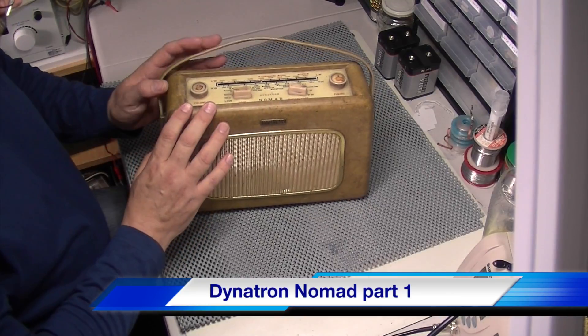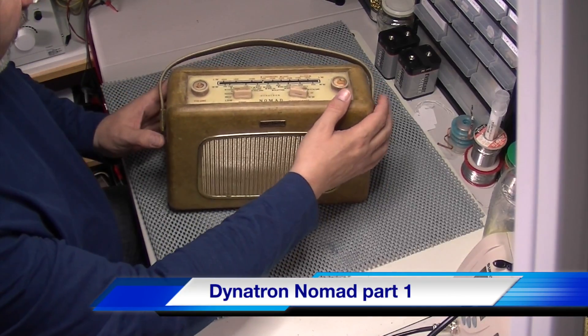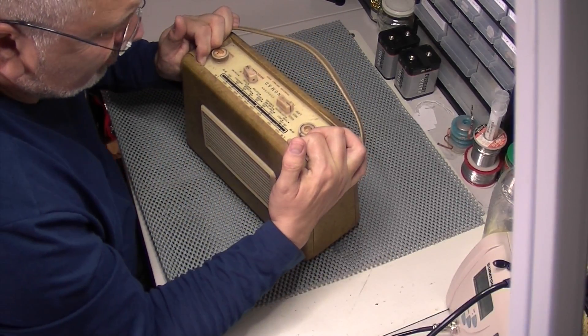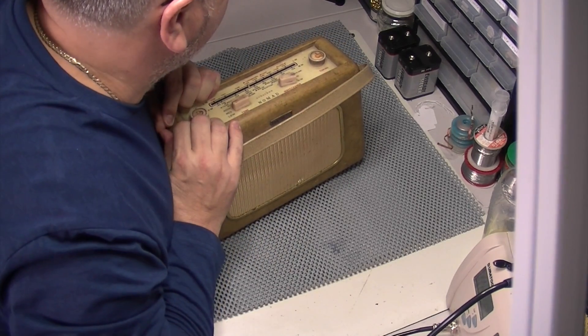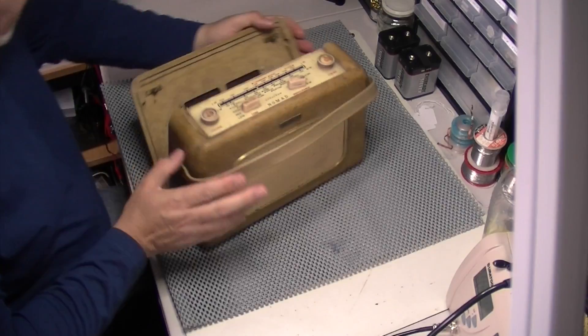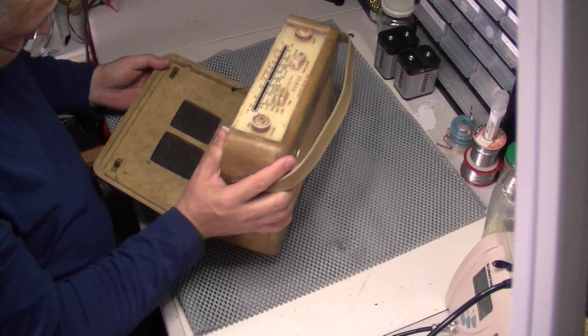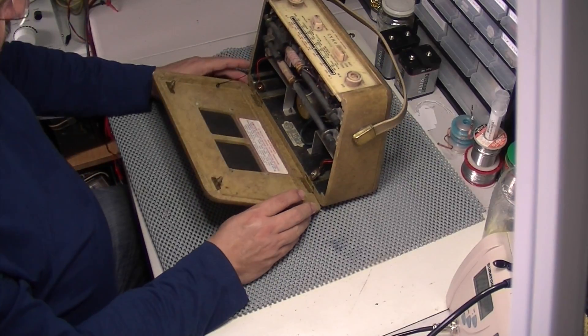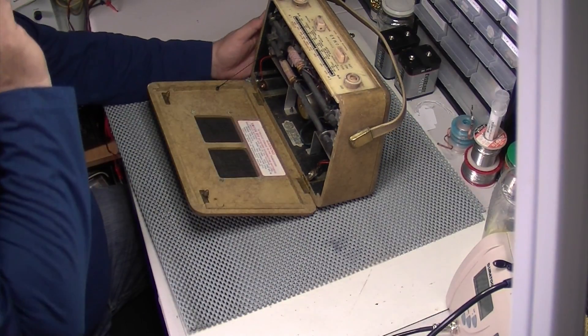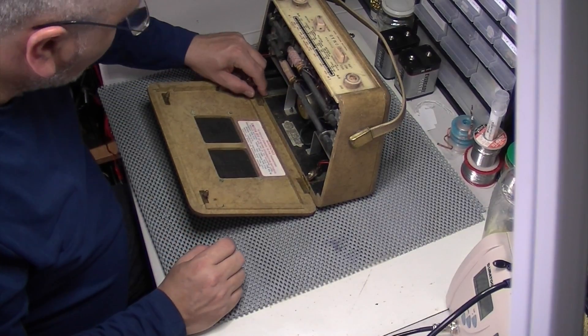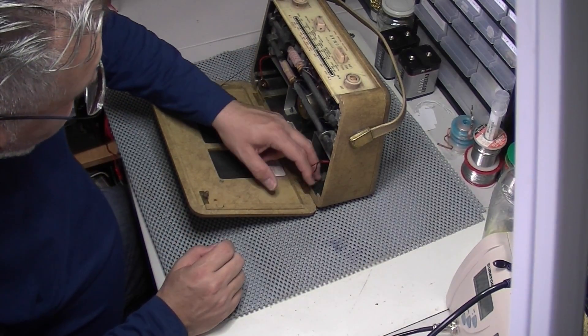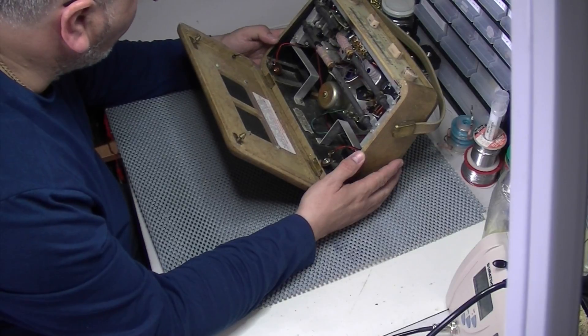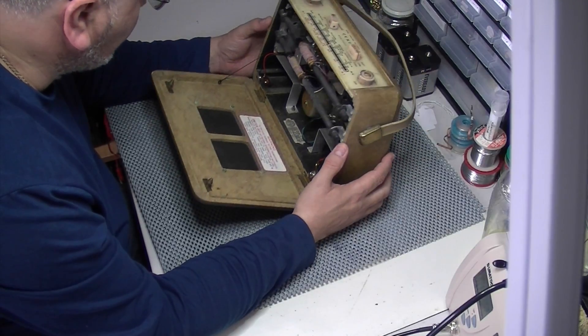Dynatron Nomad. Did I say this was a TP-10 or a TP-11? It's a TP-11, so I've got some actual service data for this. I've got the original manufacturer's service manual, dates from around about 1960 this one.